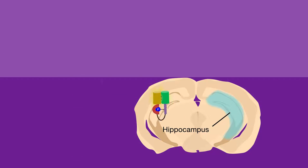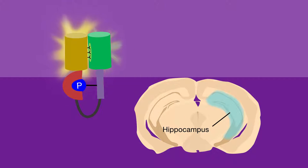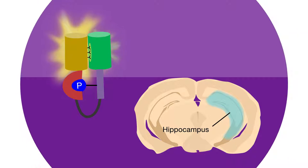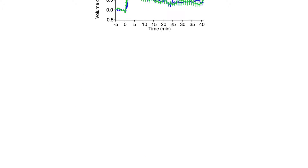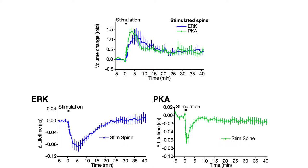Then they expressed the sensors in hippocampal neurons in mouse brain slices and artificially stimulated individual spines. As expected, stimulation made the spines grow and activated both ERK and PKA.